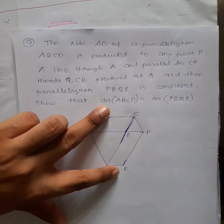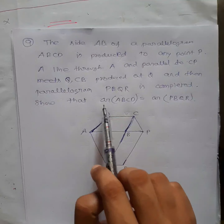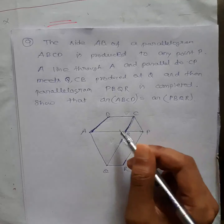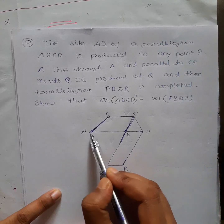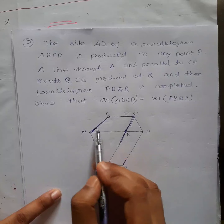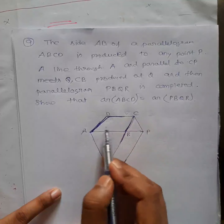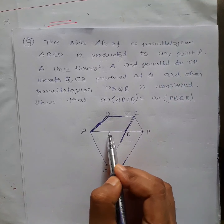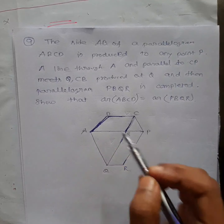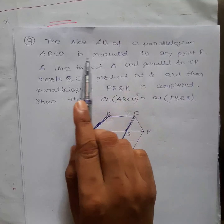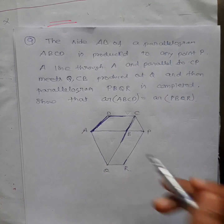In this question they have also given you a hint, so you can see that hint as well and solve the problem. See here carefully: the side AB of a parallelogram ABCD — so first thing, ABCD is a parallelogram. My diagram may not look exactly like a parallelogram, but this and this side will be parallel, and this and this side will be parallel and equal. So first information: ABCD is a parallelogram. Now, side AB is produced to any point P.